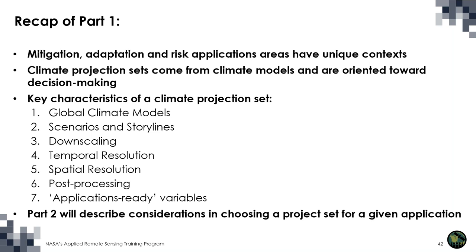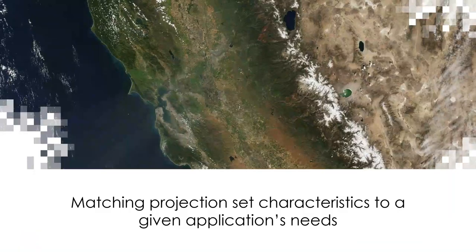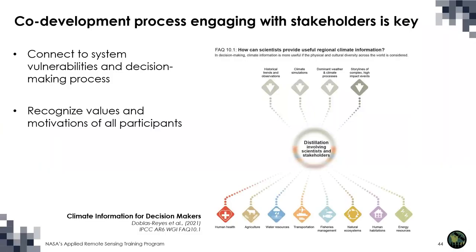Today we're going to describe the considerations in choosing a projection set for a given application. The first goal is to understand how a projection set's characteristics might match a given application's need. The process of selecting a climate projection set is one where it is very helpful to engage with stakeholders in a co-development process. It is important to connect to the system vulnerabilities that we hope to reduce and the decision-making process in terms of the types of investment or intervention that might be used for adaptation, mitigation, or risk management.